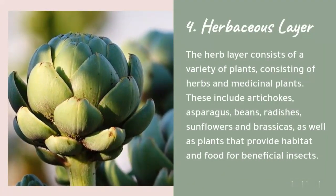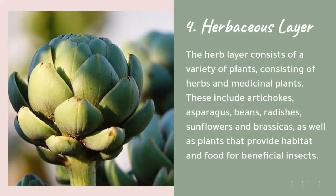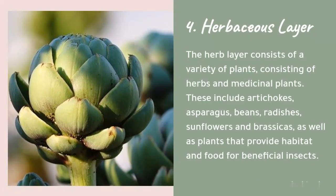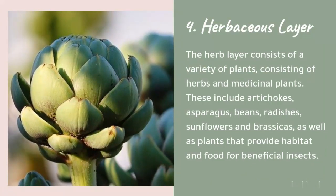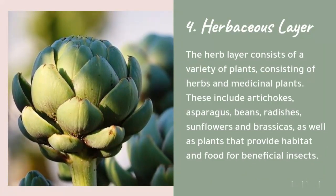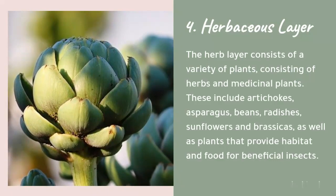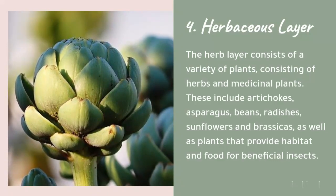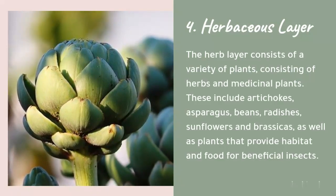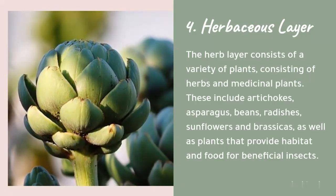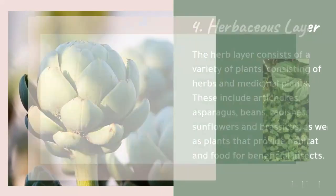Layer 4: Herbaceous layer. The herb layer consists of a variety of herbs and medicinal plants. These include artichokes, asparagus, beans, radishes, sunflowers, and brassicas, as well as plants that provide habitat and food for beneficial insects.